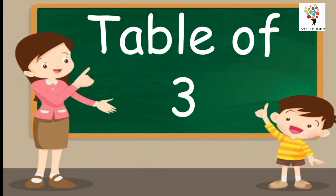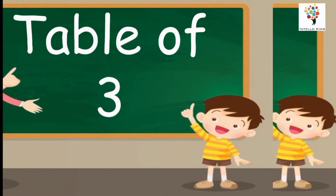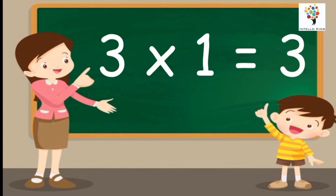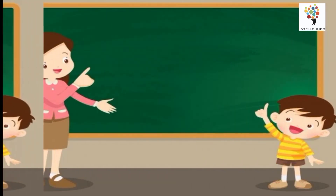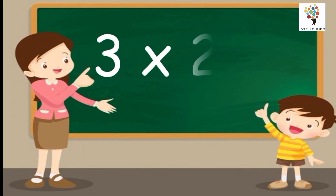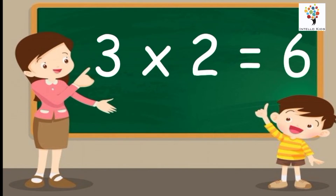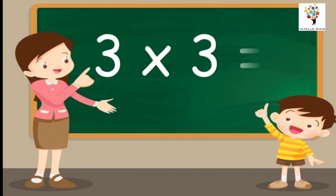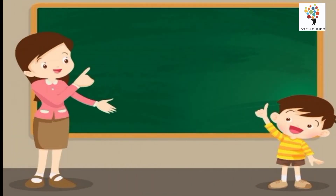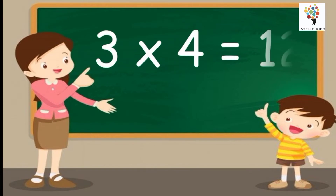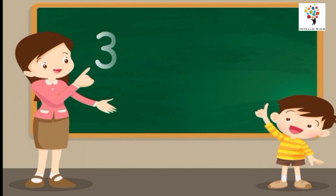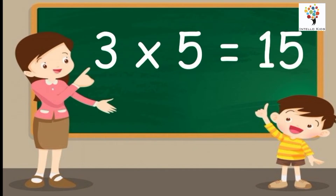Table of Three. Three ones are three. Three twos are six. Three threes are nine. Three fours are twelve. Three fives are fifteen.